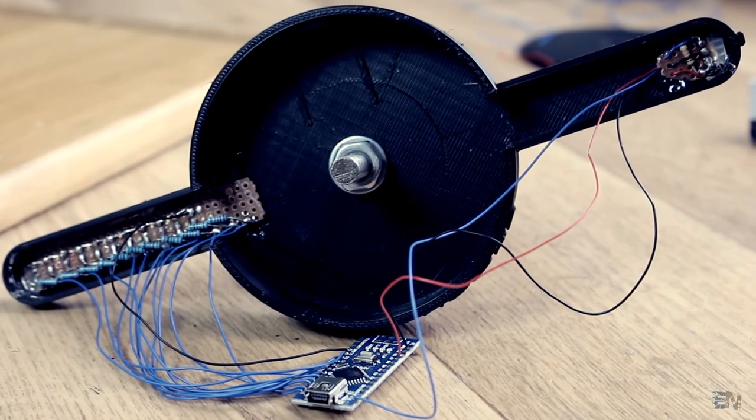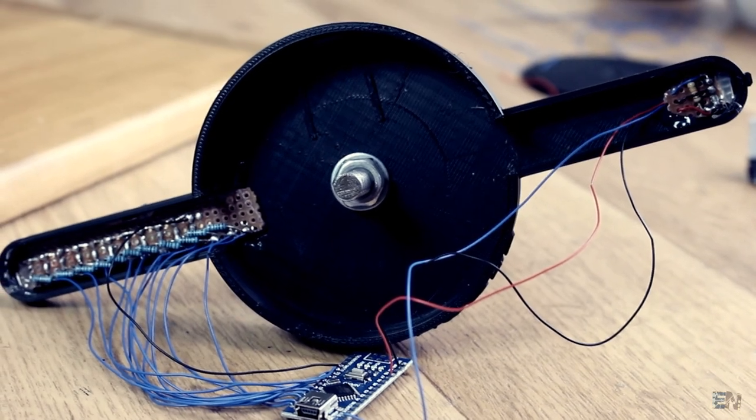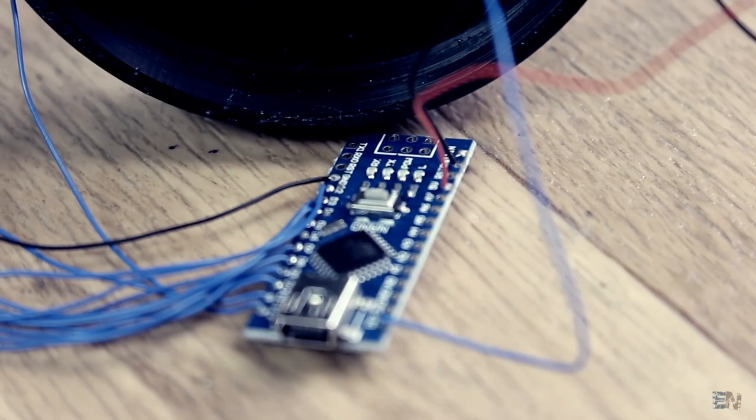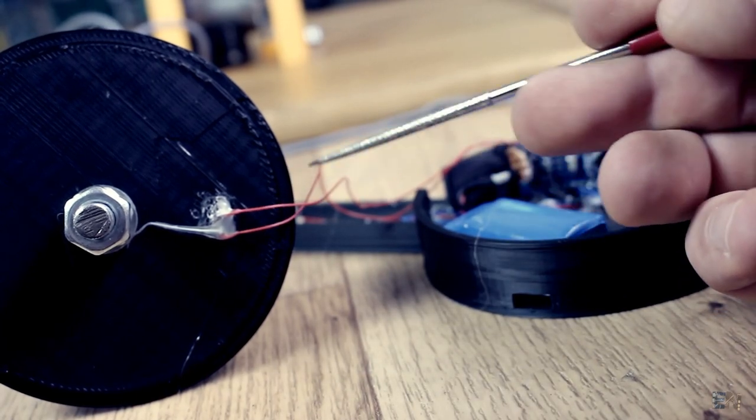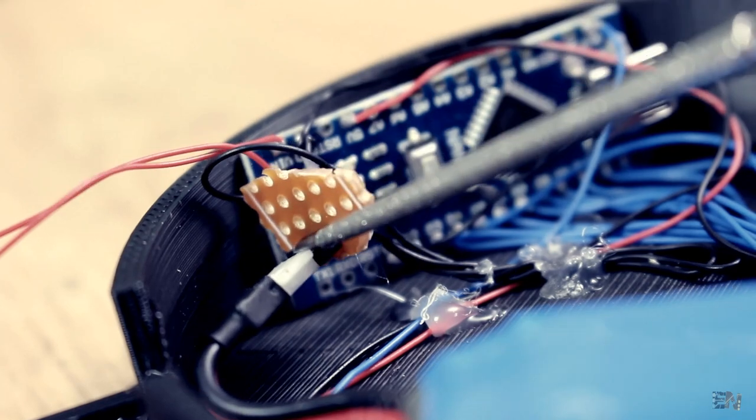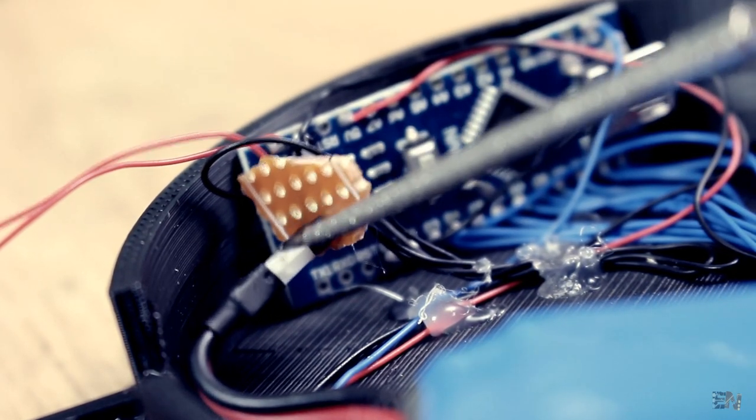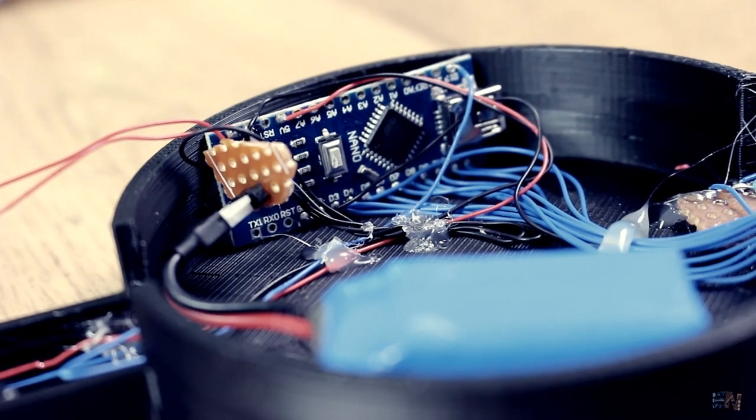Finally, I solder the 3 wires from the sensor to ground, 5V and digital pin 13, which is the pin that will create the interruption. I solder the slide switch and glue it on the back lid. Connect the battery through a jumper pin, so I could later take it out for recharge. I connect the other pin from the switch to the VIN pin and we are done.